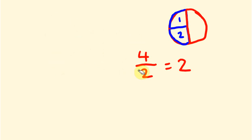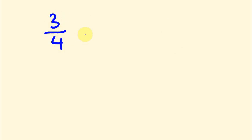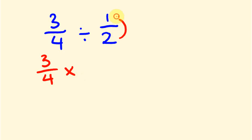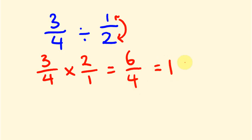Let's go to another example. What about 3 quarters divided by a half? We change it to 3 quarters times — and then we flip the half: 2 goes up top, 1 goes on the bottom. We multiply them out: 3 times 2 is 6, and 4 times 1 is 4. Six divided by 4 equals 1 remainder 2, giving us 1 and 2 over 4. Two goes into both 2 and 4, so we simplify to 1 and a half.